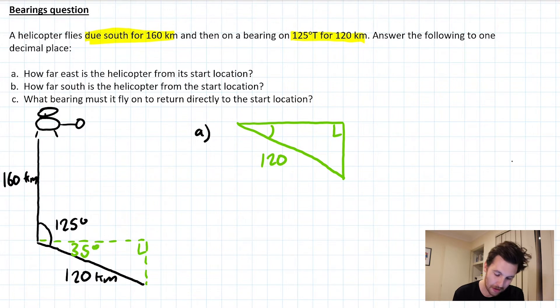So this is the thing with these bearings questions: you have to do a little bit of trickery to get it to do what you want. In terms of what the question is actually asking, it's how far east the helicopter is from the start location. So I'm going to call this length here x. That's going to tell us how far from the original point to the east the helicopter has gone.